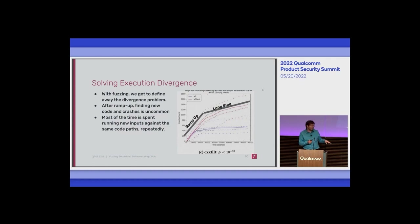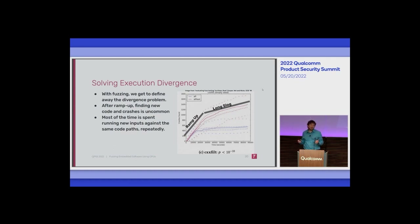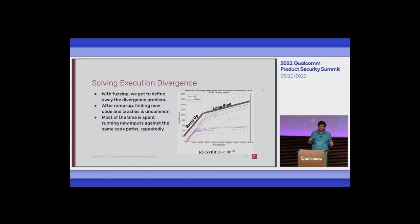Normally when you have traditional program operations you want fast things that are low latency and interactive — GPUs are not like that; they're designed for batch processing with high throughput and high latencies. But with fuzzing we get to effectively define away the problem. This is a graph from a paper by Andrew Ruth and collaborators about measuring fuzz testing. It shows the typical ramp-up cycle where you're finding new code a lot, followed by a long slog where finding any new code is extremely rare.